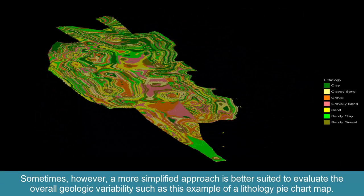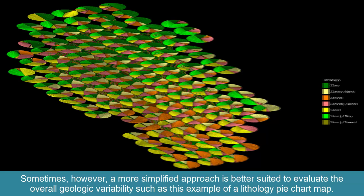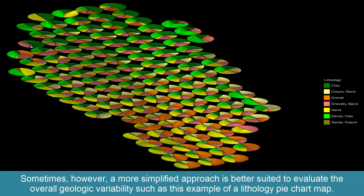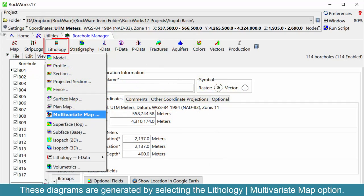Sometimes, however, a more simplified approach is better suited to evaluate the overall geologic variability, such as this example of a lithology pie chart map. These diagrams are generated by selecting the lithology multivariate map option.